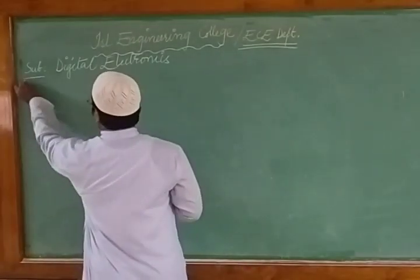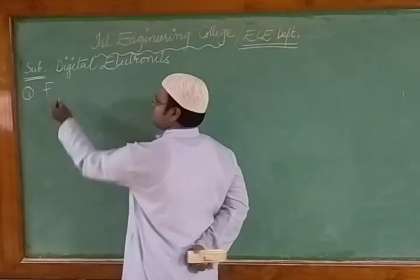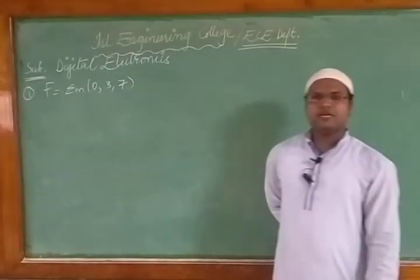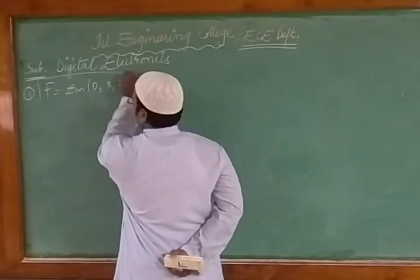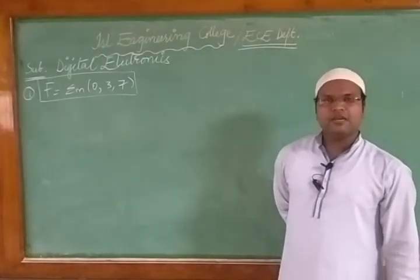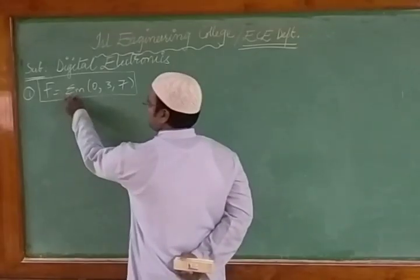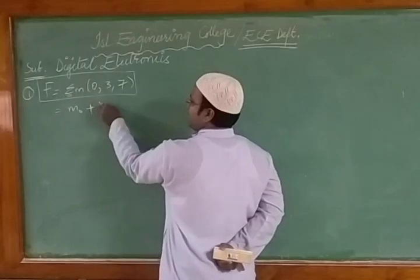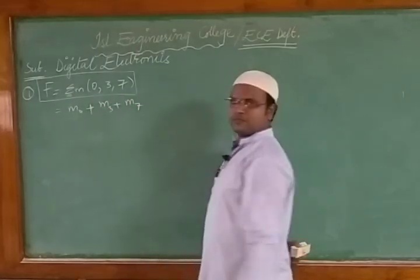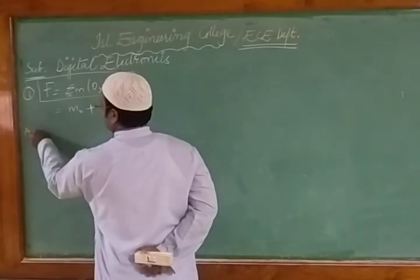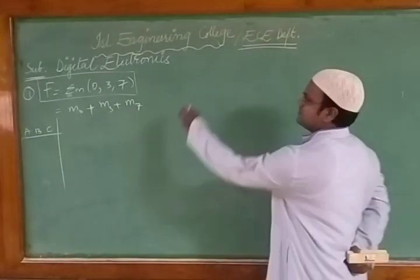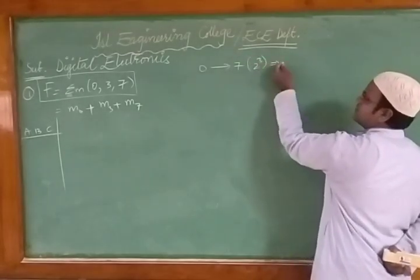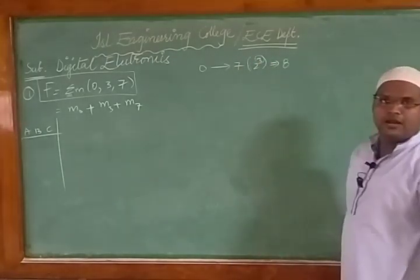The first question gives a Boolean function f = Σm(0, 3, 7), and asks us to implement it by converting into binary literals. Summation means addition of all the terms, so we can write it as m0 + m3 + m7. We take three variables a, b, c because the range 0 to 7 indicates 2³ = 8 combinations, meaning it is a three-bit input.